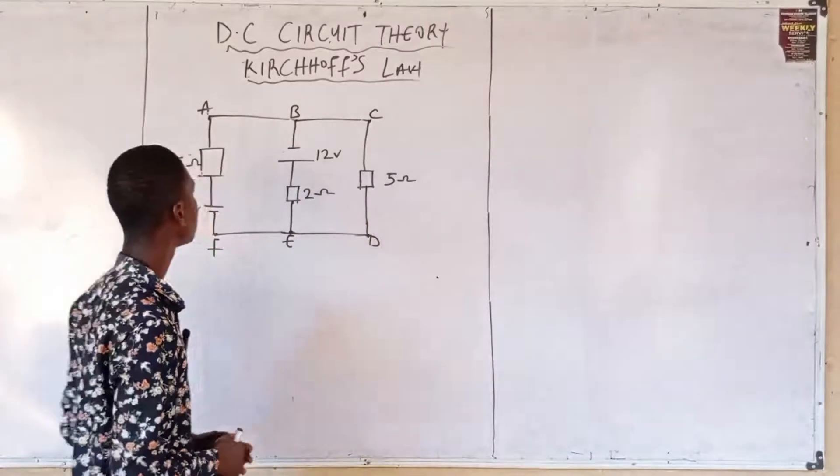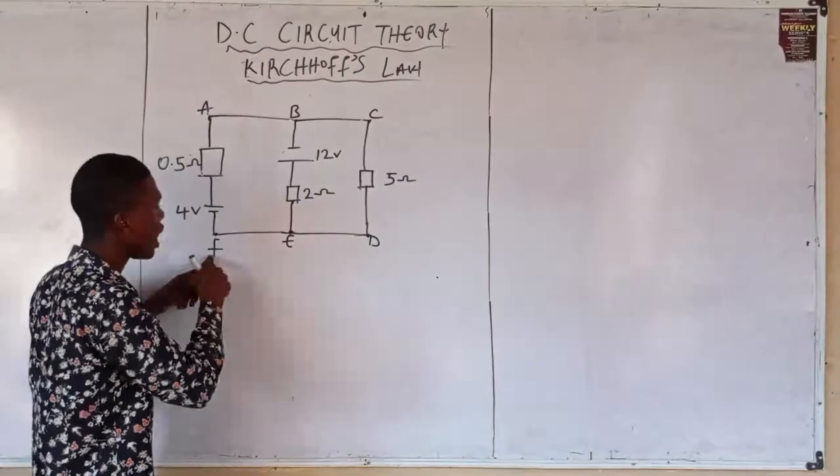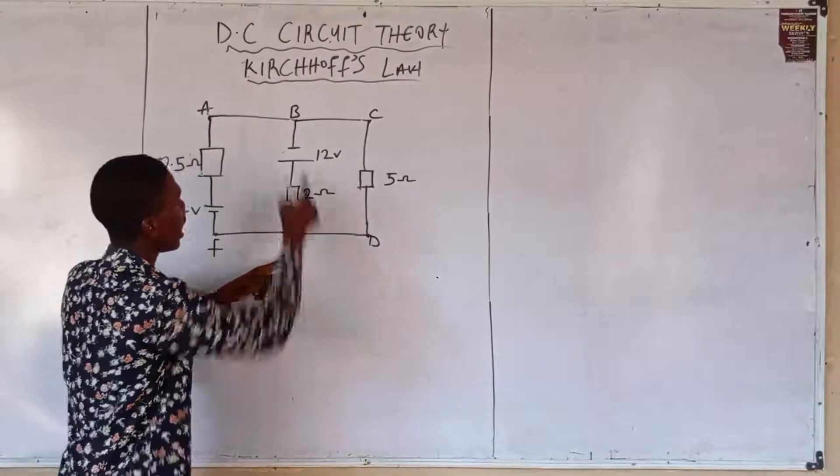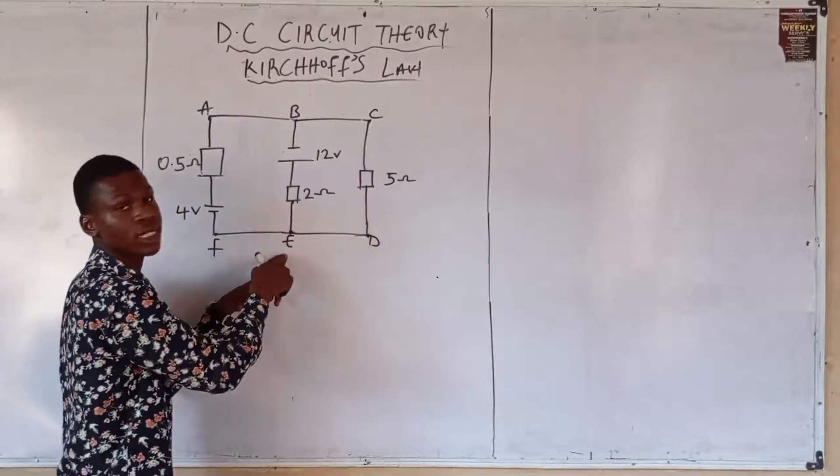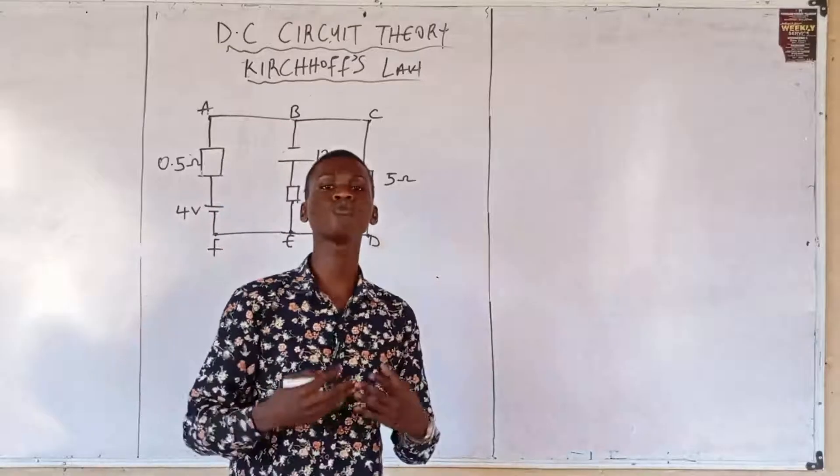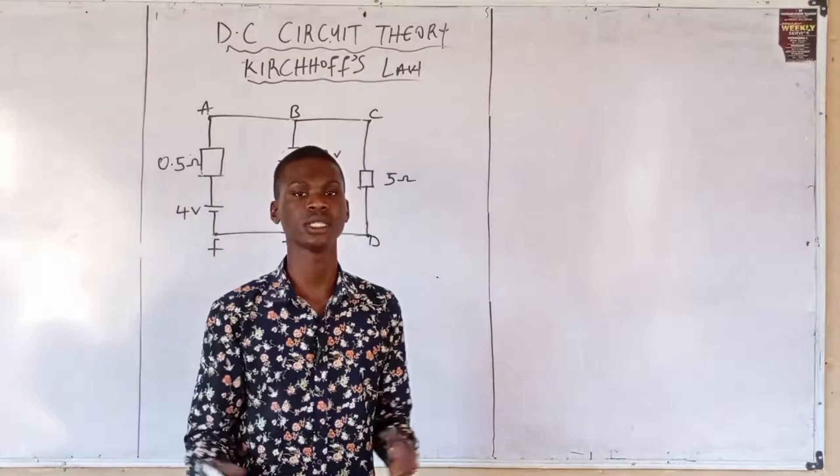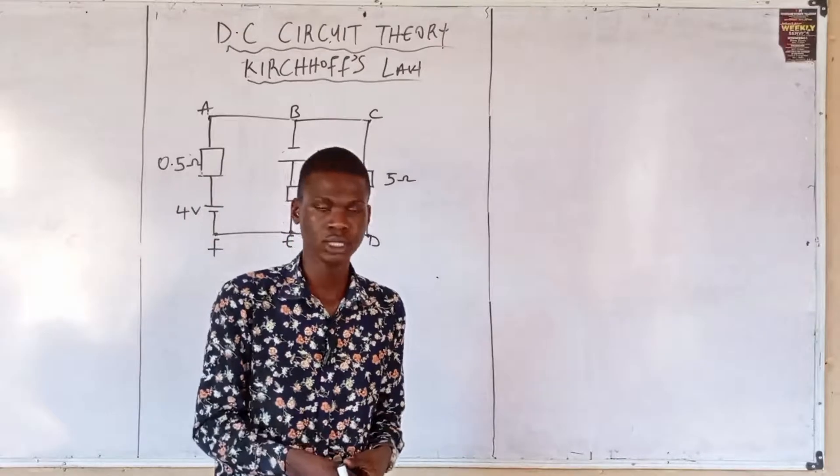Similarly, at point E, this is the junction where wires FE, ED, and BE are connected at point E. Hence, when you have two or more connections of a wire or circuit element, then that point is simply called a node.